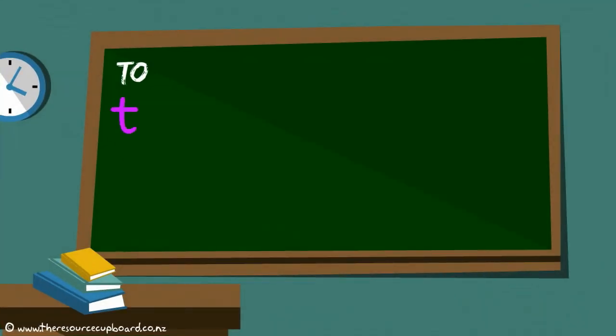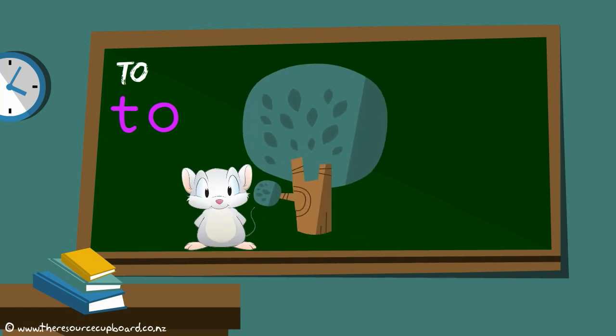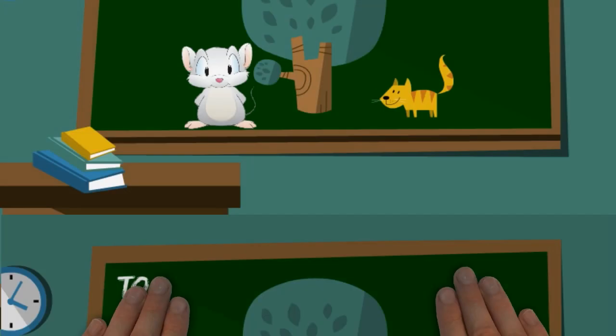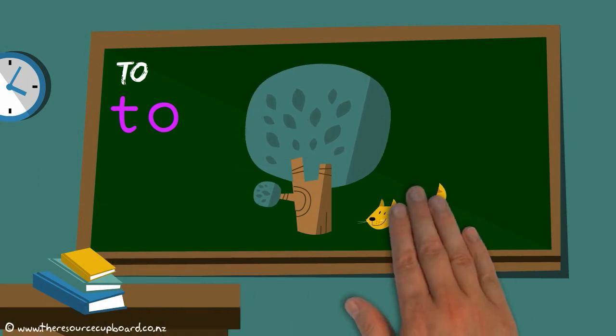Two, T-O. This busy little chappy can also tell us where things are positioned. The mouse was to the left of the tree. The cat was to the right of the tree. Squeak! went the mouse as it ran away to the back of the yard.